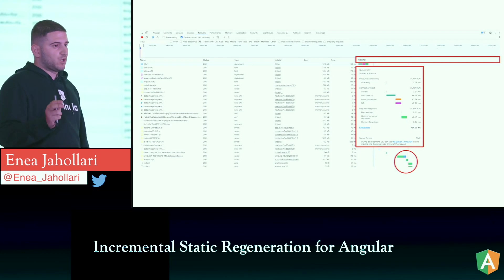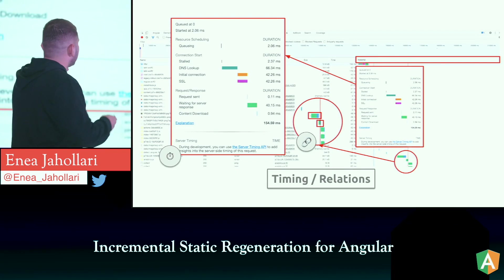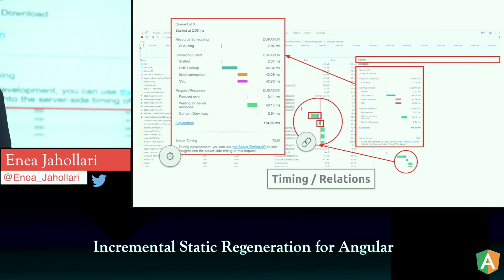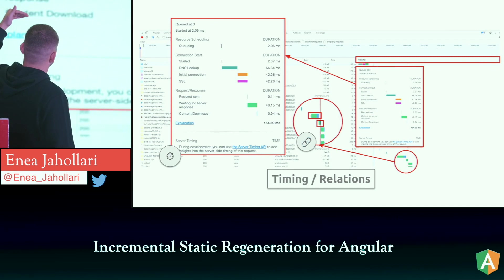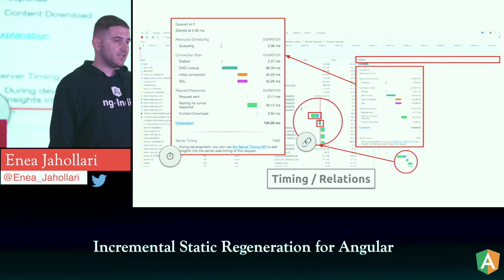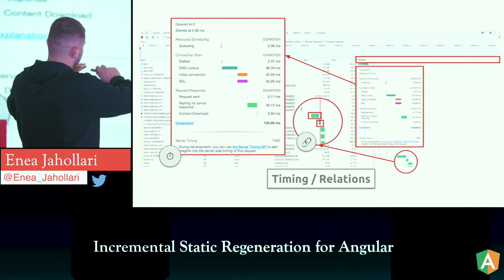You've probably opened the network request panel. The first entry on every web page is the document. It has fields like queuing, stall, DNS lookup, SSL, request sent, waiting for server response, and content download. All of this is the time it takes the index.html to arrive to the client.